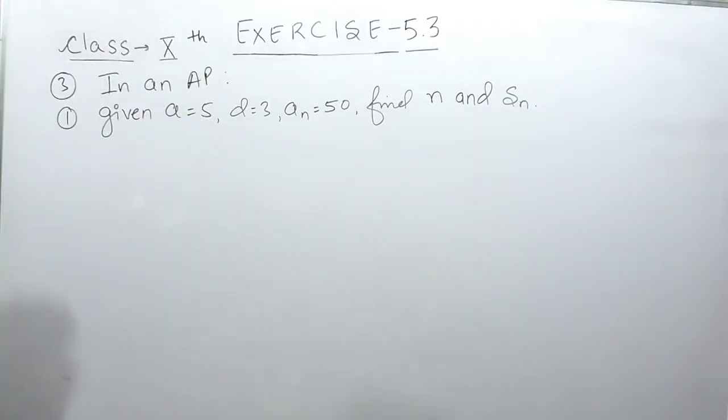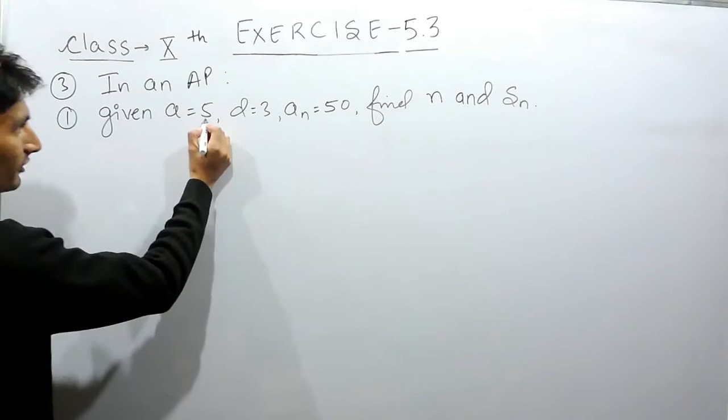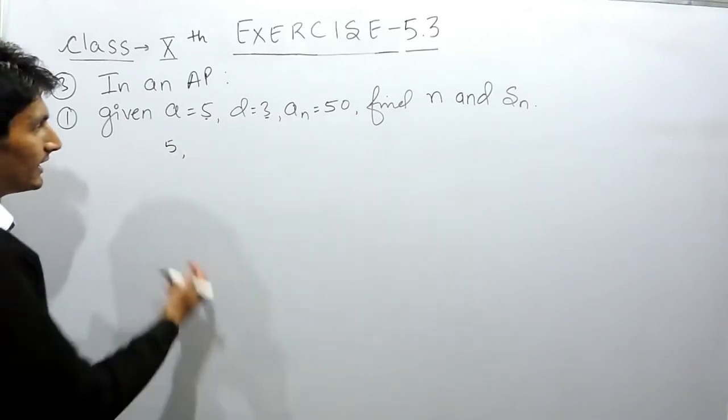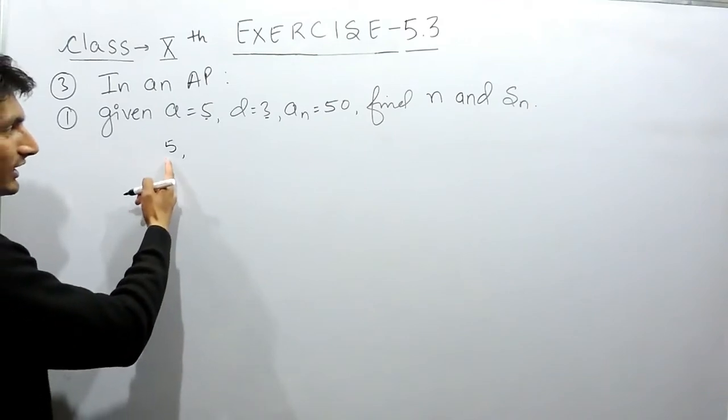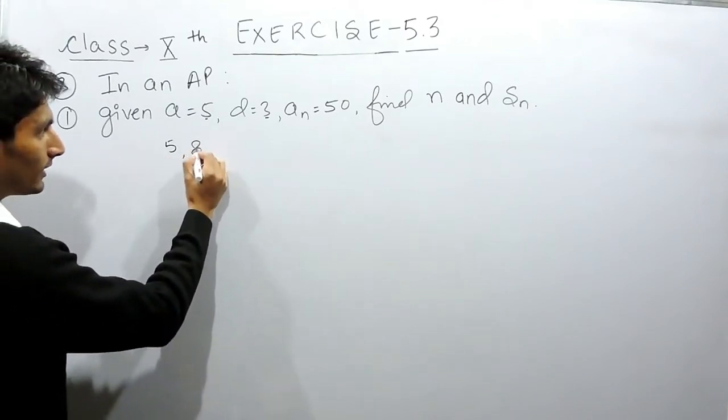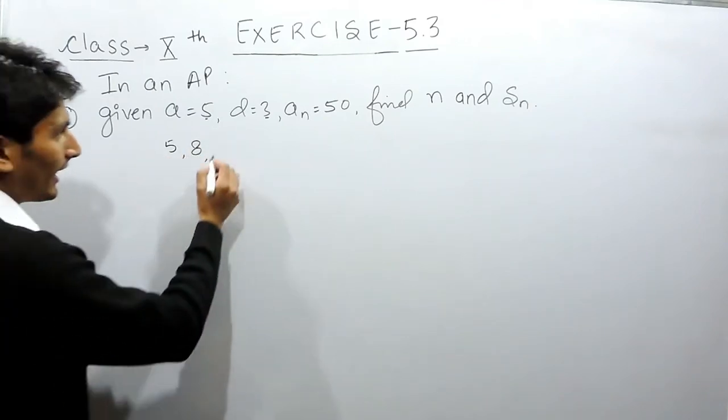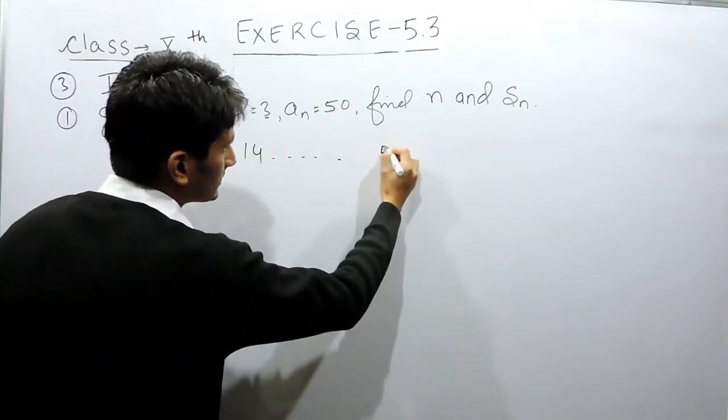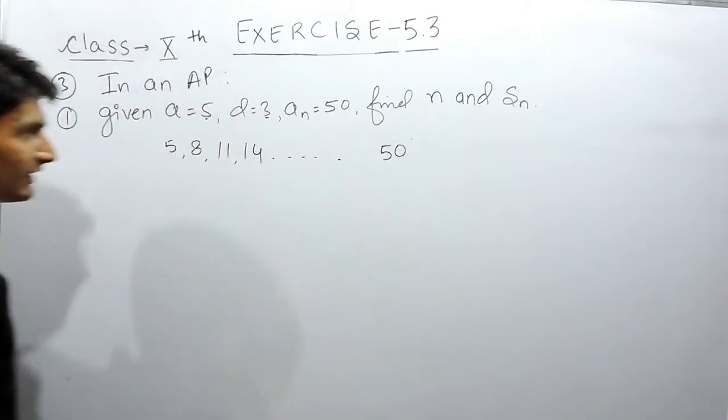Now let's form, first of all let's form that AP. If the first term is 5 and common difference is 3, means you are adding 3 to this term to make the next term and so on, and the last term of this AP is 50.